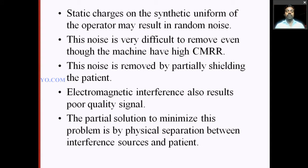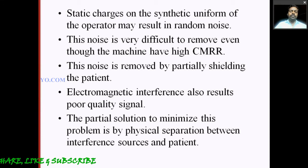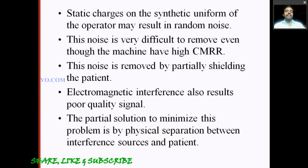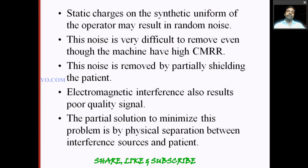Electromagnetic interference also results in poor quality signals. Electromagnetic interference comes from devices like fans and motors, where an electromagnetic field is generated by electric charge, current, voltage, and the rotating magnet. A fan or motor executes the electromagnetic concept, creating interference that affects the signal. The partial solution to minimize this problem is physical separation between the interference source and the patient — increasing distance reduces interference.